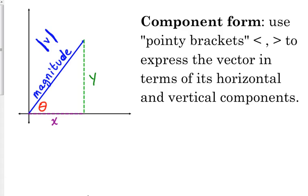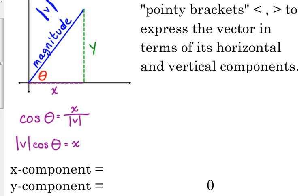The adjacent. And the magnitude is the hypotenuse. So the cosine of theta is equal to x, the adjacent, over the magnitude, which is the hypotenuse. So if we were solving this for x, we would multiply both sides by the magnitude. So that means that we can find the horizontal component, or the x component, by the magnitude times the cosine of the angle. So that's going to give us our x component, our horizontal component of our vector.